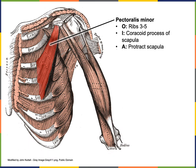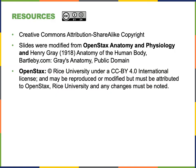Pectoralis minor has its origin from ribs three through five, although there is some variation — occasionally it originates on ribs two through four. As seen in the illustration, the origin is ribs three through five. The insertion of pectoralis minor is the coracoid process of the scapula, which provides the action of protracting the scapula.